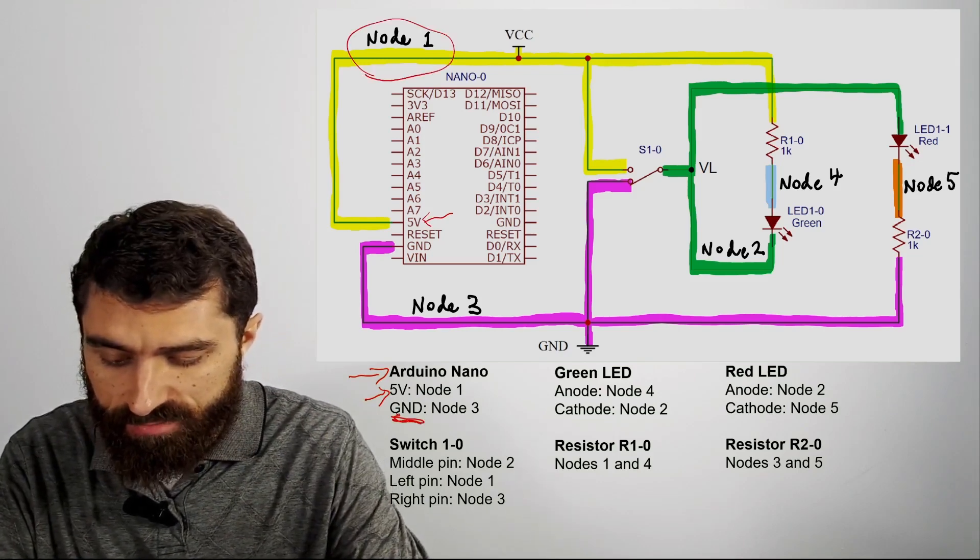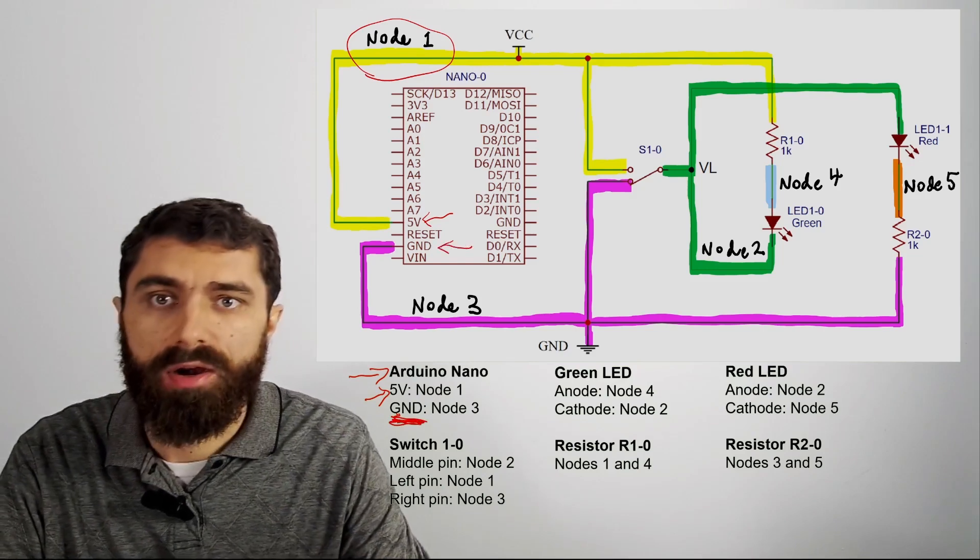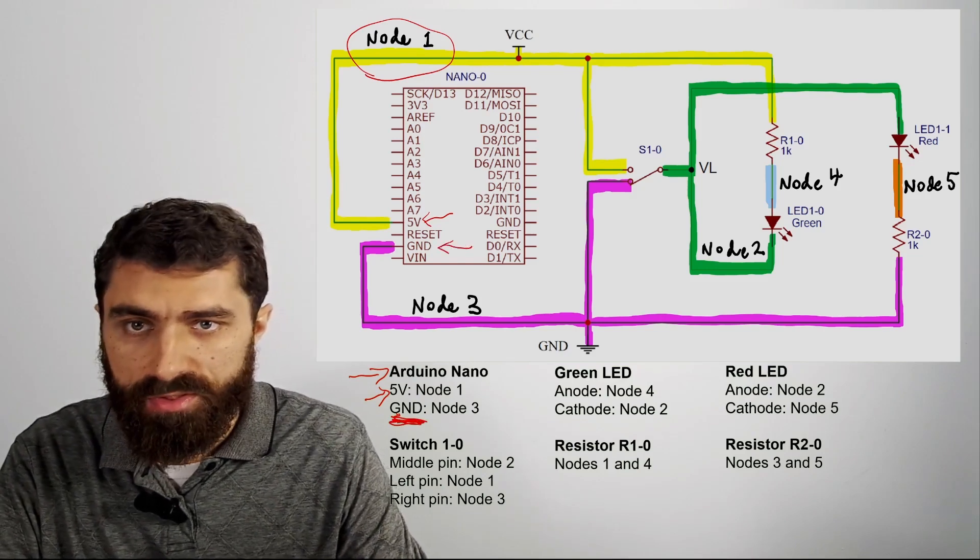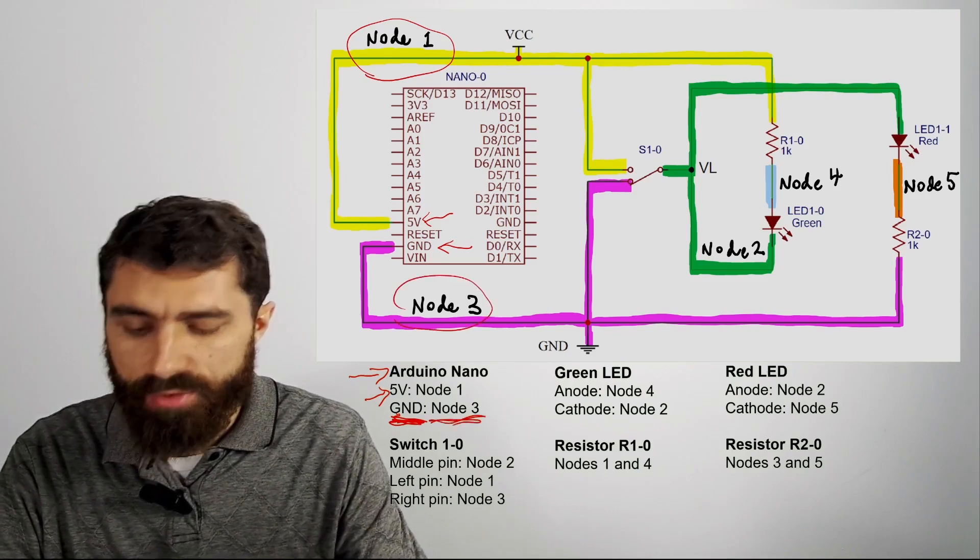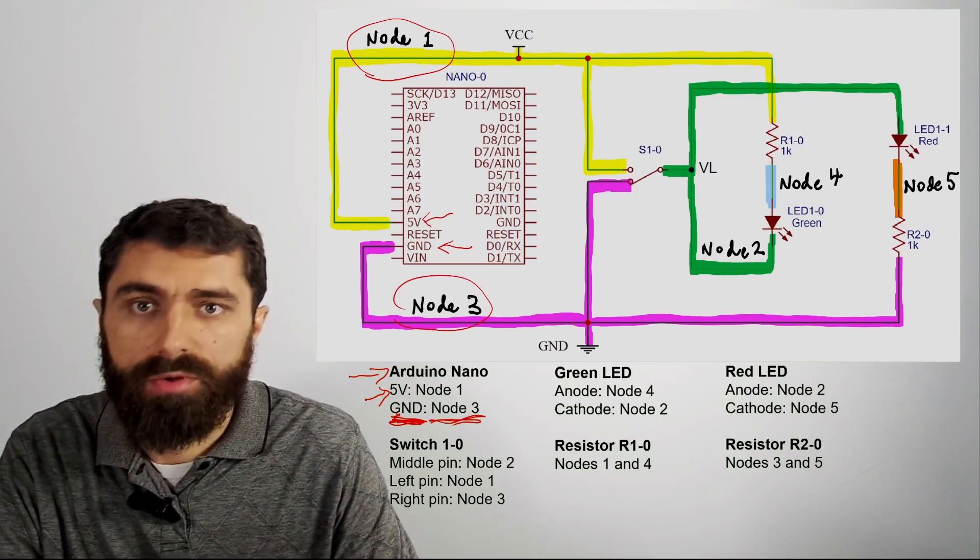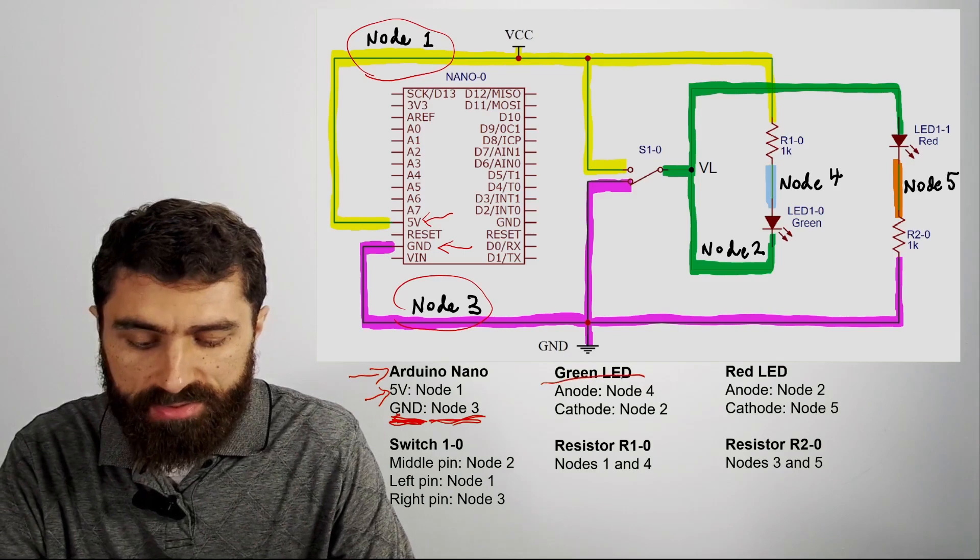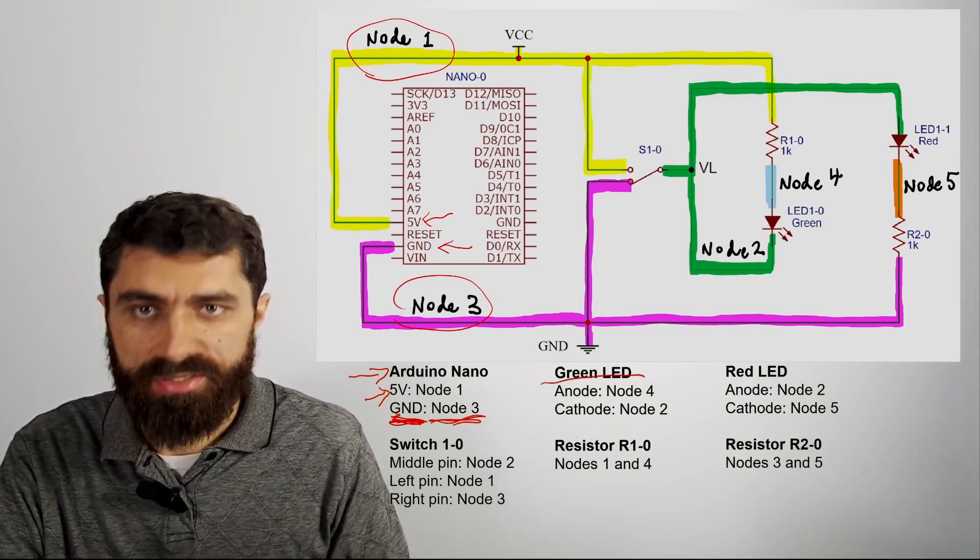You can also see here the ground pin, GND there, is connected to node three. So basically, what you want to do is go through each component and just list what each node is connected to.